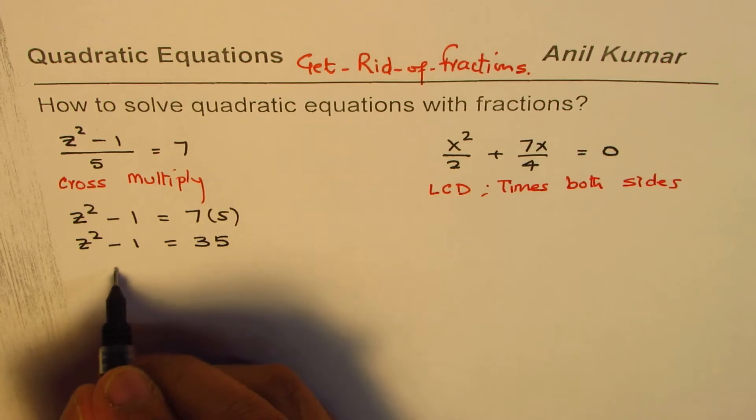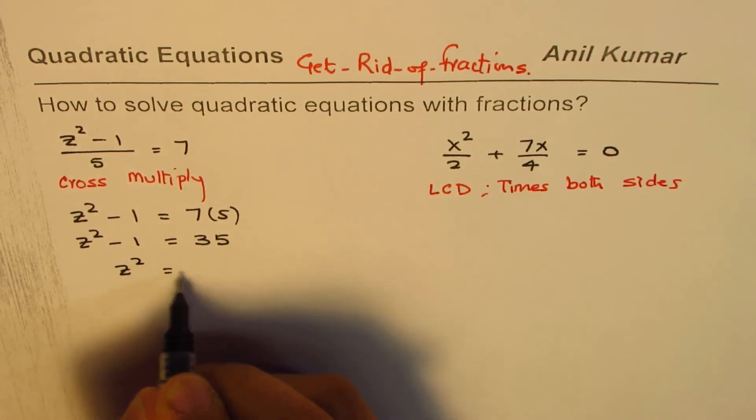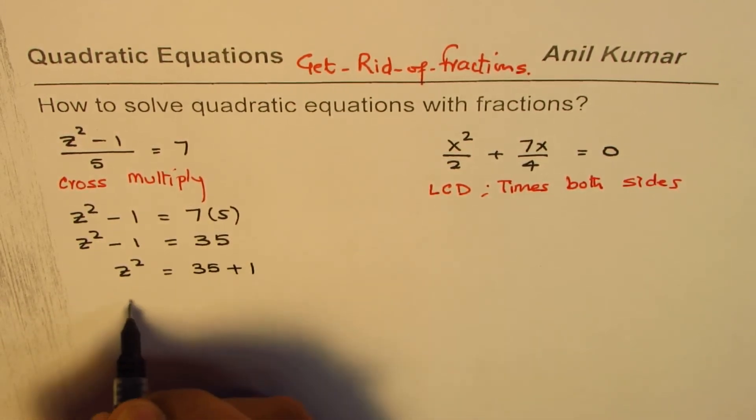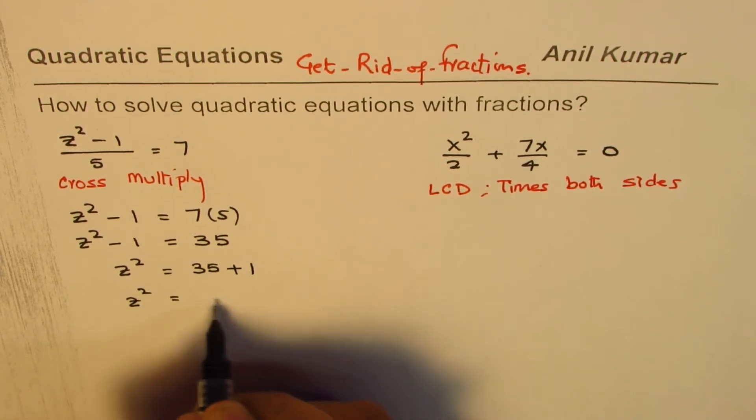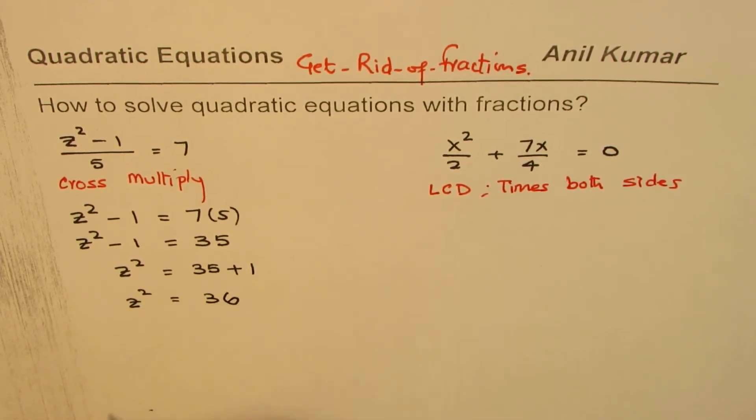Let me take 1 on the other side. So we have z squared equals to 35 plus 1 or z squared equals to 36.